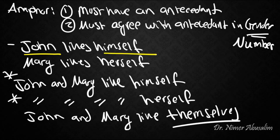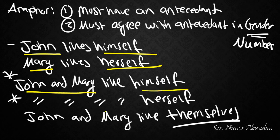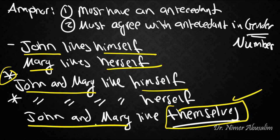So this is a singular antecedent. Himself is singular. Mary's singular. Herself is singular. John and Mary is plural. This is singular. So they don't agree. And that's why it is ungrammatical. John and Mary here is plural. Themselves is plural. So this sentence is fine. Now that should be enough as an example of how the scientific method is done.